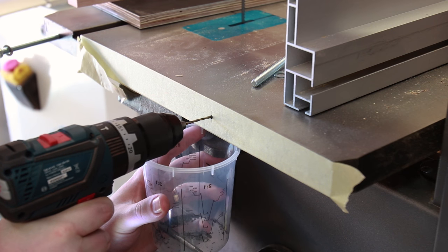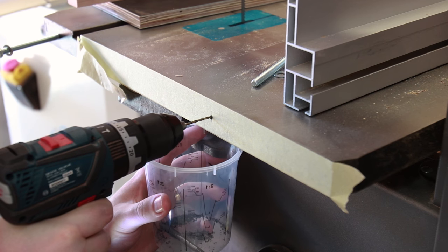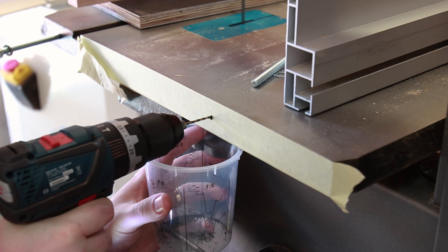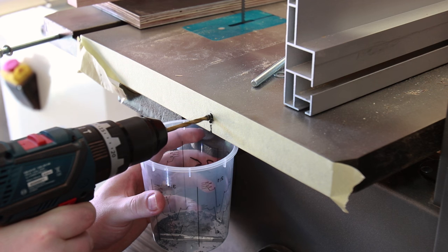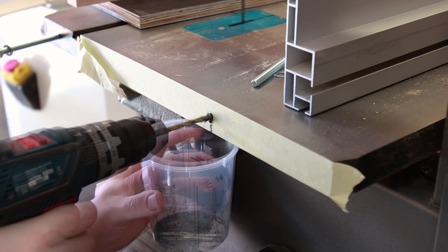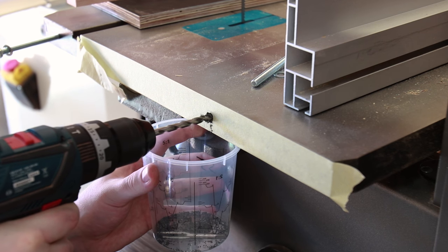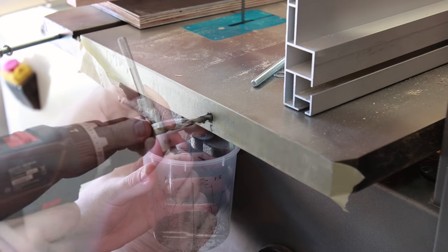I'm drilling through the cast iron table to eventually tap M8 threads. I even went out and bought the correct sized drill bit for tapping M8 coarse threads which is a 6.8mm bit. The plastic container is just to catch the metal shavings so they don't end up all over the workshop.